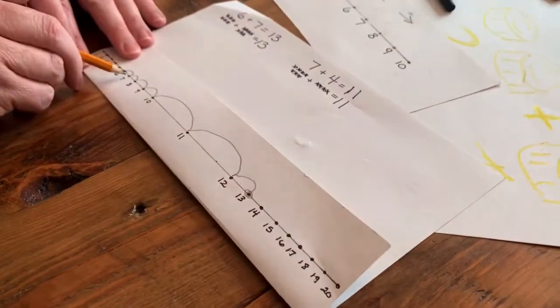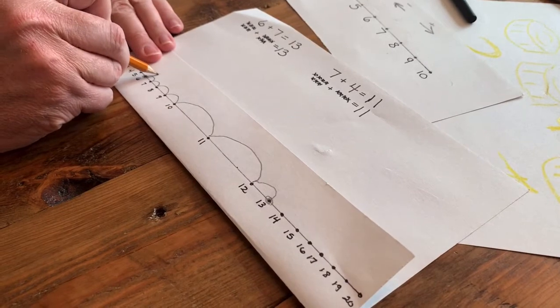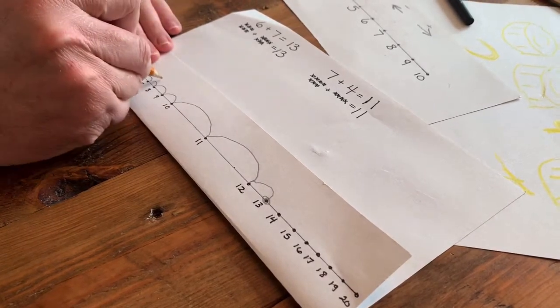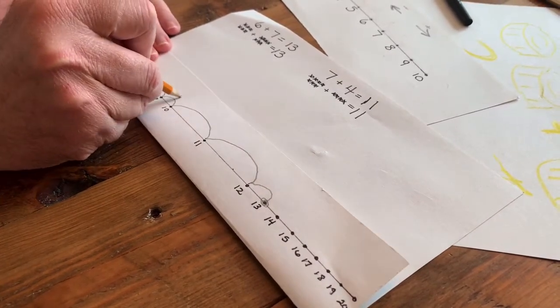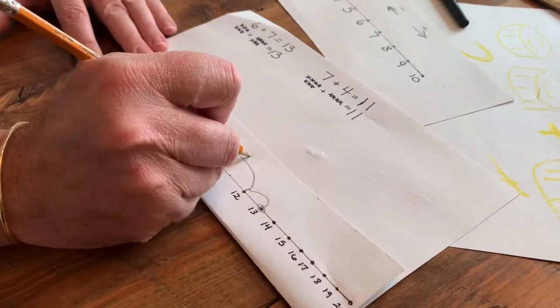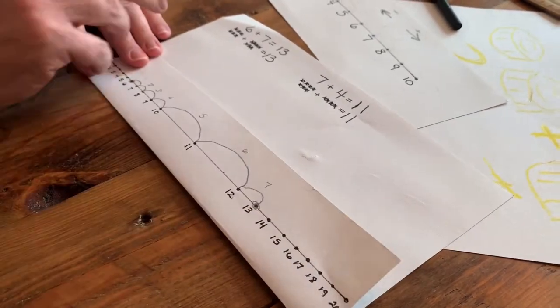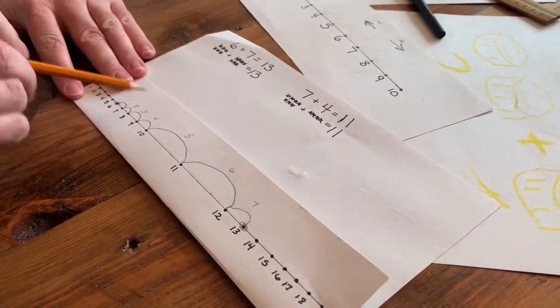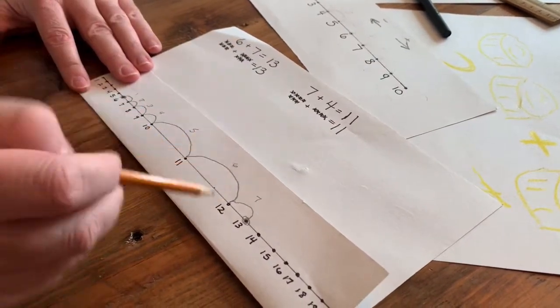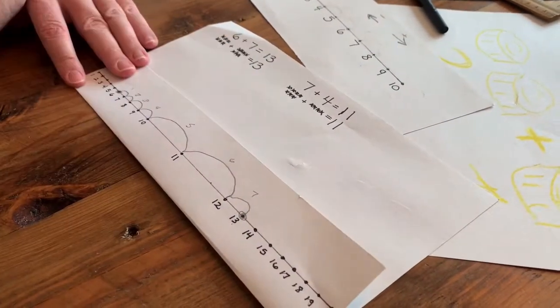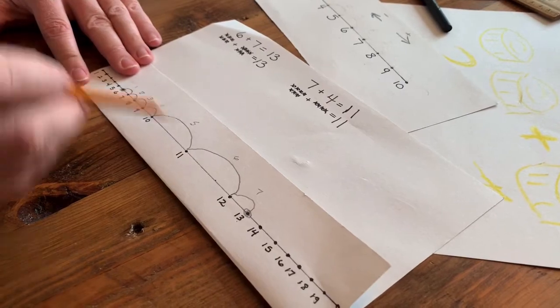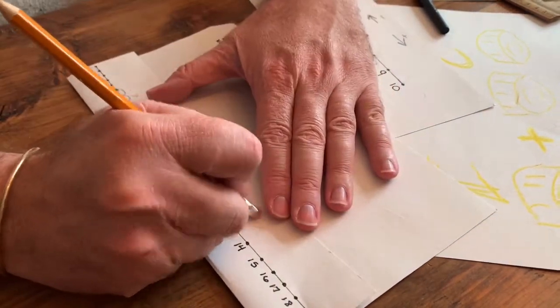Then I'm going to go back and count my leapfrogs. 1, I need 7. 2, 3, 4, 5, 6, 7. So I did it right. I started at 6. I made 7 leaps and I ended at 13. So all I did was just make a larger number line and it still works correctly.